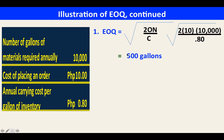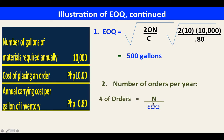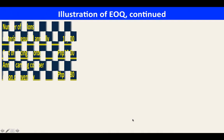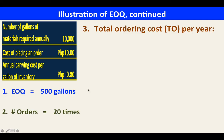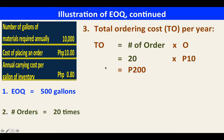Now we can compute the number of orders per year: N over EOQ, which is 10,000 divided by 500, giving us 20 orders. This means we will place 20 orders per year, ordering 500 units each time. The total ordering cost is the number of orders times the ordering cost: 20 times 10 pesos equals 200 pesos.